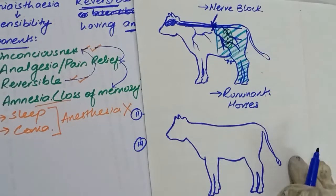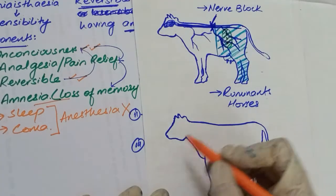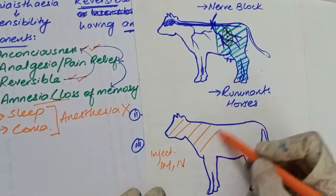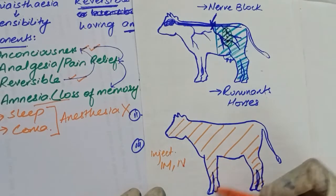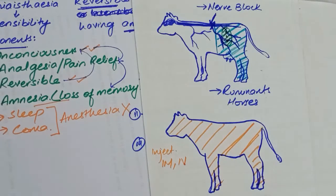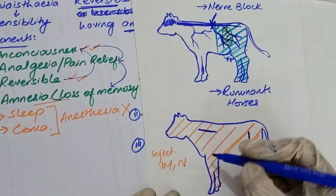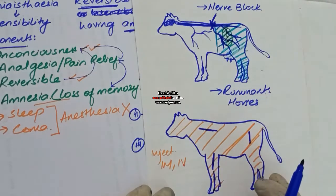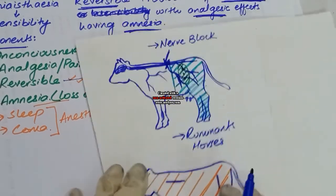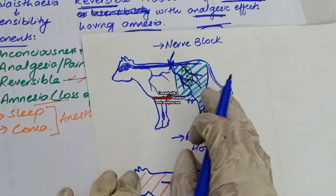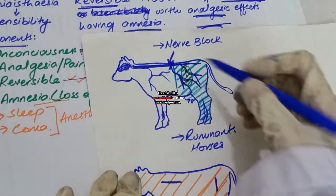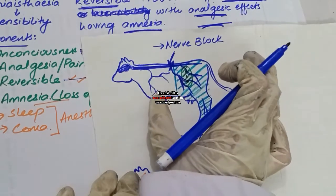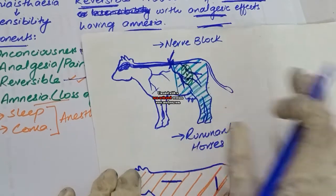In general anesthesia, the drug is injected either intramuscularly or intravenously, and the whole body comes under anesthetic effects. You are free to operate any portion of the body. In contrast, with nerve blocks or regional anesthesia, you can only perform surgery in that specific anesthetized region — outside that region, the animal will respond with pain.